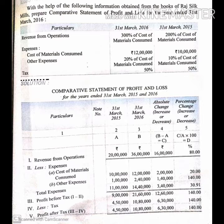Now for expenses. Cost of material consumed: 2015 is Rs. 10 lakhs, and 2016 is Rs. 12 lakhs. For other expenses: in 2015, it is 10% of cost of material consumed, so 10% of 10 lakhs equals Rs. 1 lakh. In 2016, other expenses are 20% of cost of material consumed, so 20% of 12 lakhs equals Rs. 2 lakhs 40,000.